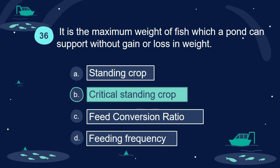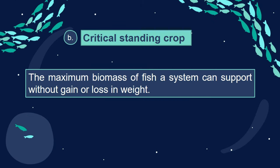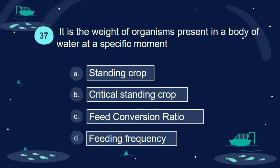Answer: B. Critical standing crop. Critical standing crop is the maximum biomass of fish a system can support without gain or loss in weight.